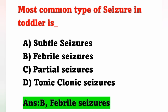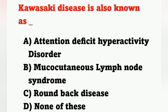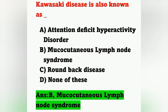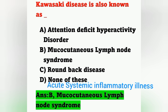Next question: Kawasaki disease is also known as? Options: A) Attention Deficit Hyperactivity Disorder, B) Mucocutaneous Lymph Node Syndrome, C) Round back disease, D) None of these. Kawasaki disease is also known as Mucocutaneous Lymph Node Syndrome. Option B is the correct answer. Kawasaki disease is an acute systemic inflammatory illness.